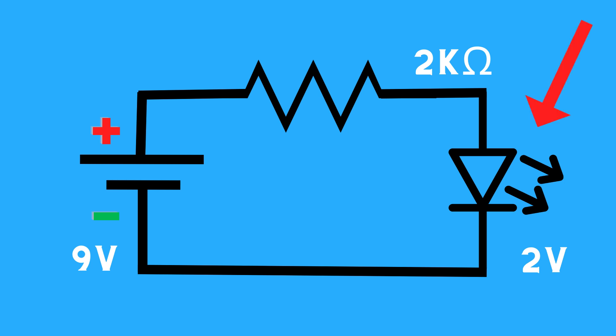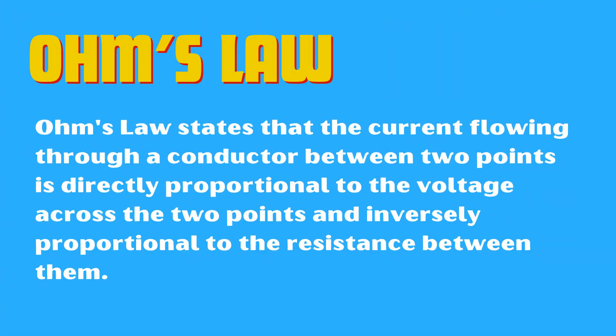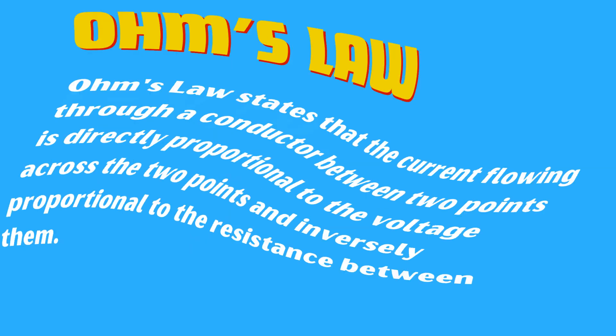The LED diode is rated at 2 volts. Before we measure current with a multimeter, we should get familiar with Ohm's law. Ohm's law states that the current flowing through a conductor between two points is directly proportional to the voltage across the two points and inversely proportional to the resistance between them.